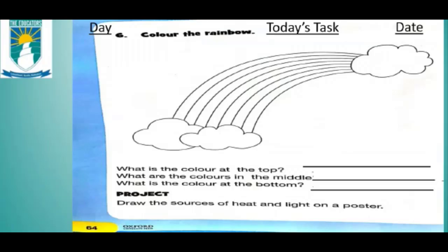Dear students, in the previous lesson we studied all 7 colors of the rainbow and learned their names. Here is a homework for you. You have to solve page number 64 by keeping the previous information in mind. You have to color the rainbow.